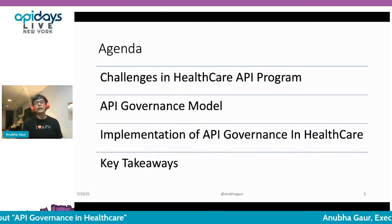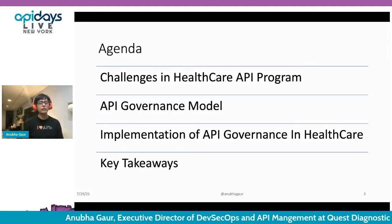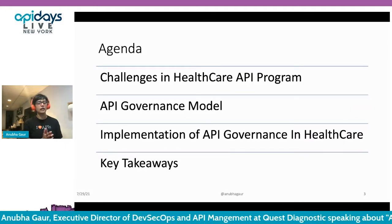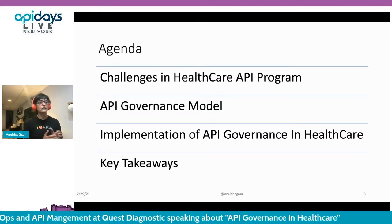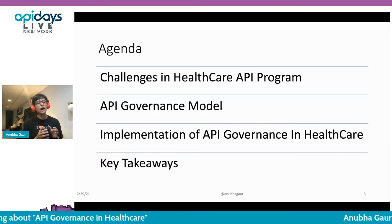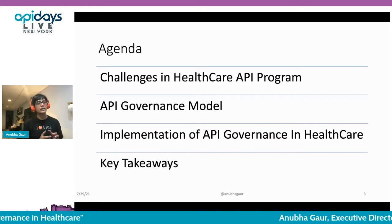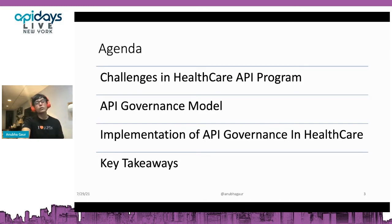Today's agenda is that we will talk about governance in healthcare APIs. The moment you hear the word governance, you must be thinking, oh my God, this is a burden and it is going to slow things down. But in the next 20-ish minutes, you will see how API governance can provide clear directions and help you implement an API strategy. We will talk about the model, how we implement it, and the key takeaways.